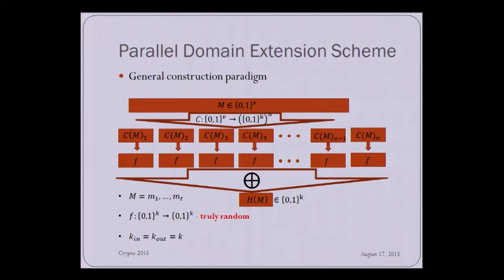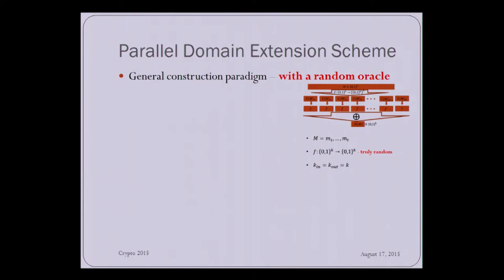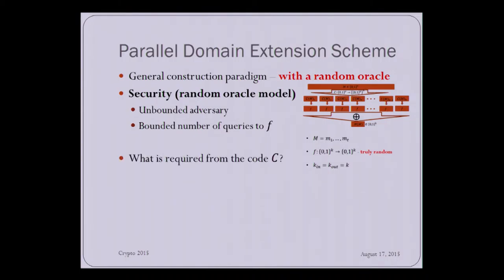It's very easy to see that the construction is simple. So you take the message, you apply a code, and then you apply xor. So the only question is, what should the code be? What do we need to require from the code? So in order to understand that, let's define security in the random oracle model. So here we consider an unbounded adversary that is bounded by the number of calls it can make to the function to the oracle f. And having this security definition in mind, now we can think about what should be required from the code c.